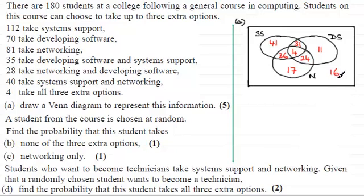So there's our Venn diagram — I hope you were able to get those values. It then goes on to say that a student from the course is chosen at random. We need to find the probability that this student takes none of the three extra options for part B (one mark), and in part C the probability that they do networking only (one mark). Pause the video if you'd like to have a go.